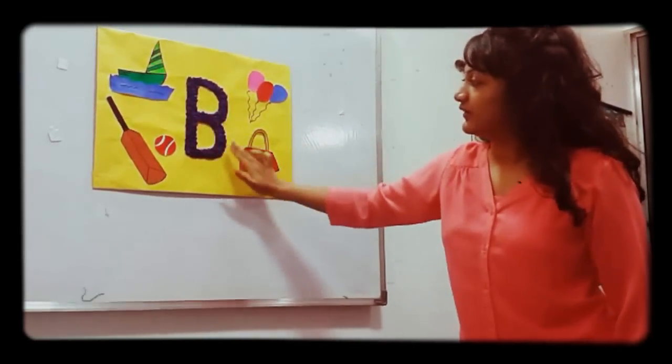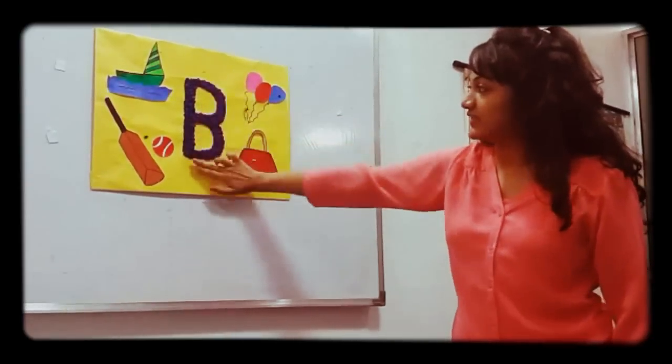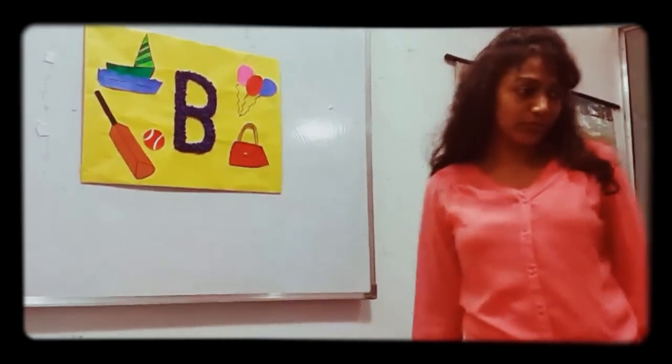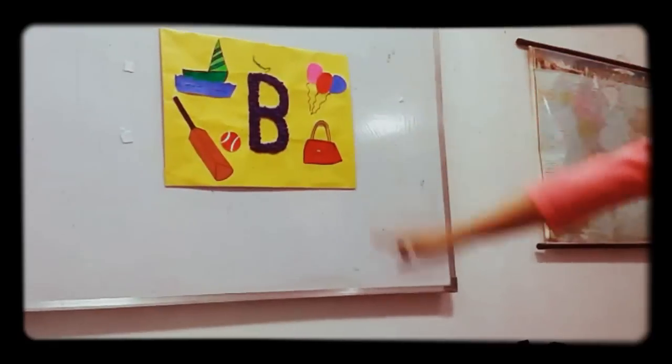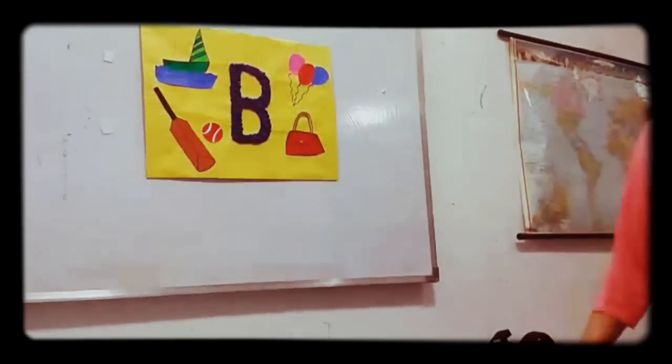One standing line and two jumps. Standing line, two jumps. Can you all show it to me? Standing line and two jumps. Standing line, two jumps. Yes, that's the letter B.